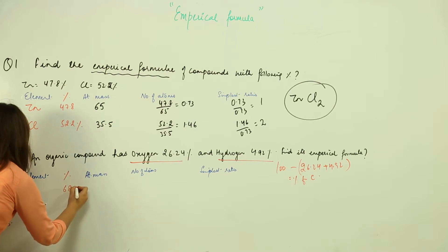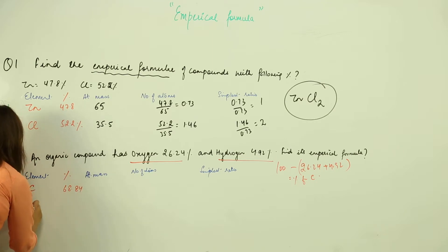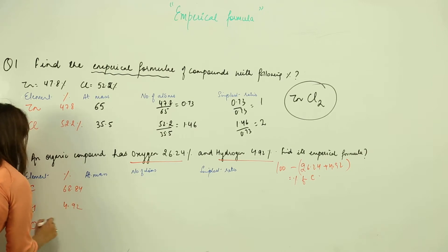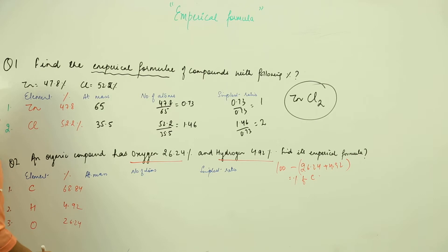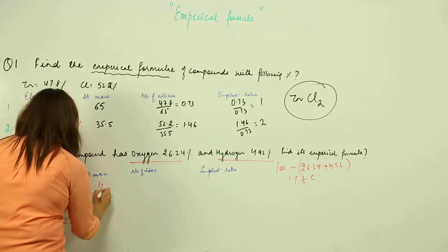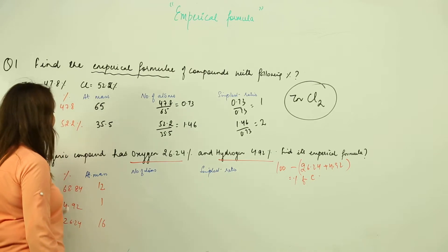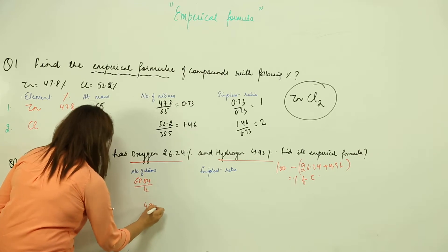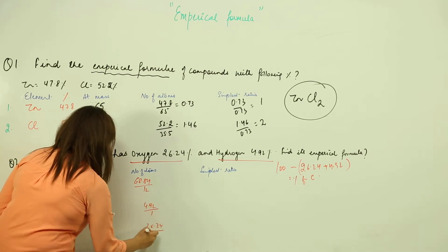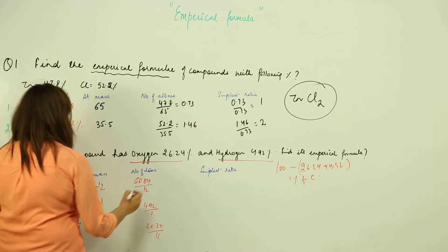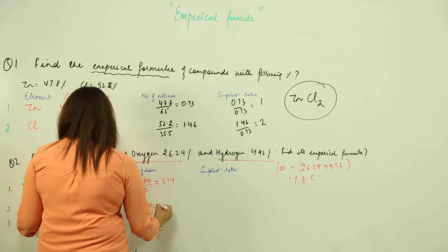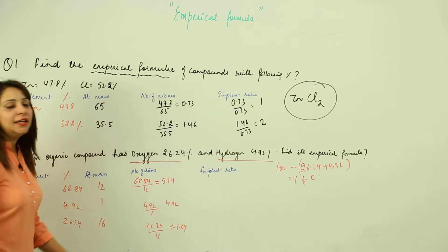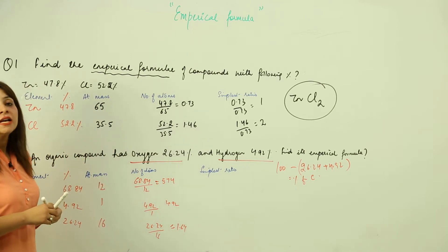Carbon comes out to be 68.84%. The atomic masses are: carbon 12, hydrogen 1, and oxygen 16. Dividing each percentage by its atomic mass gives: carbon 5.74, hydrogen 4.92, and oxygen 1.64.